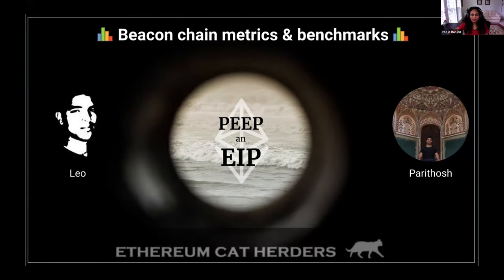Welcome to another episode of Peep and EatIP, an educational video series where we get an introduction to the Ethereum improvement proposals, upcoming features, upgrades, and basics of the Ethereum blockchain. I'm your host Puja Randhan, joined by Colfax and Nolan from the ETH Staker community. In this episode on the beacon chain and benchmarking, we'll have an overview of standardized metrics, interoperability, and resource analysis of consensus clients.